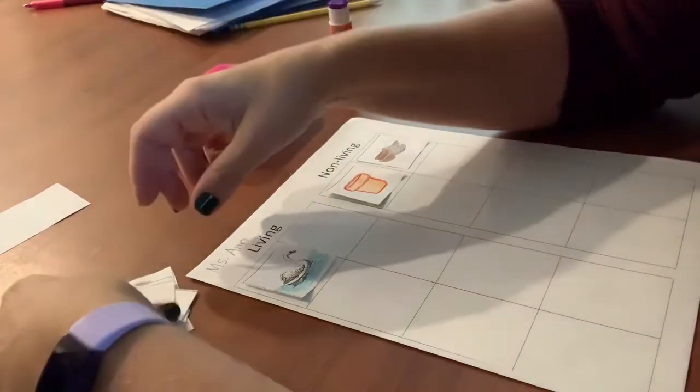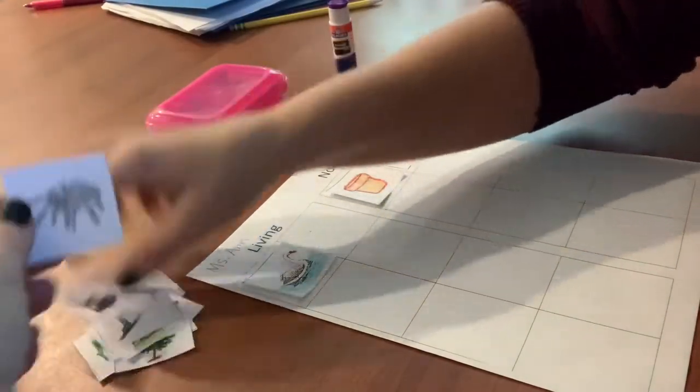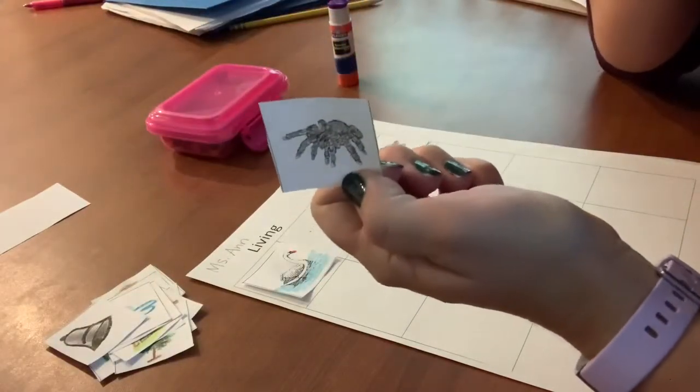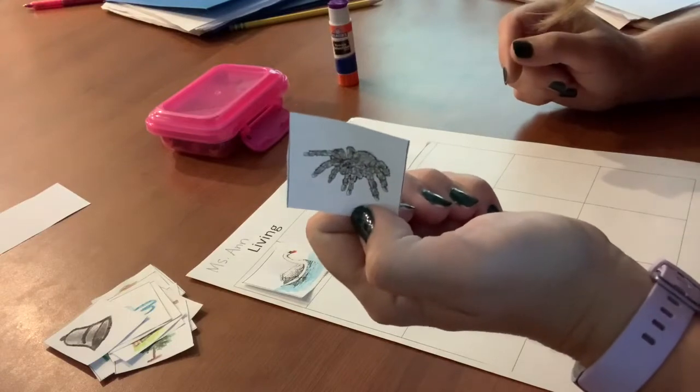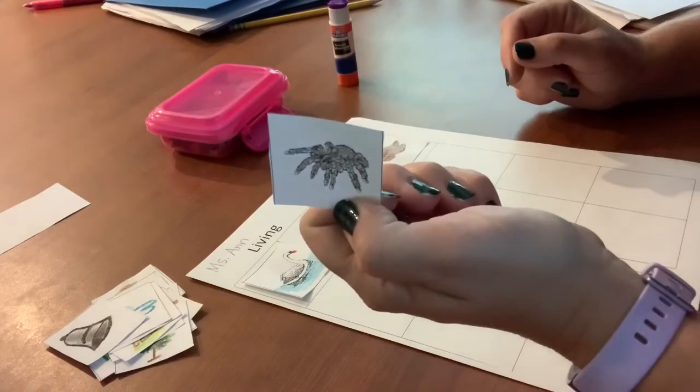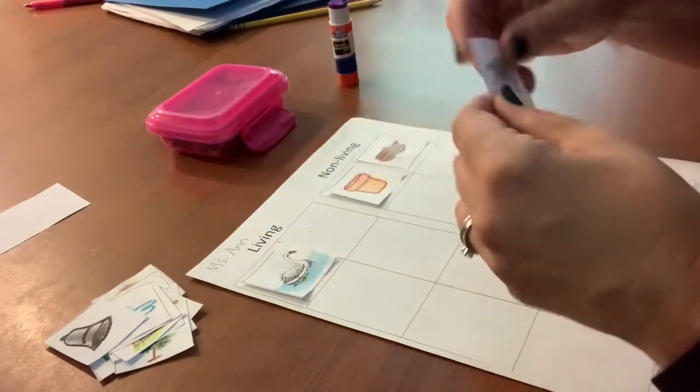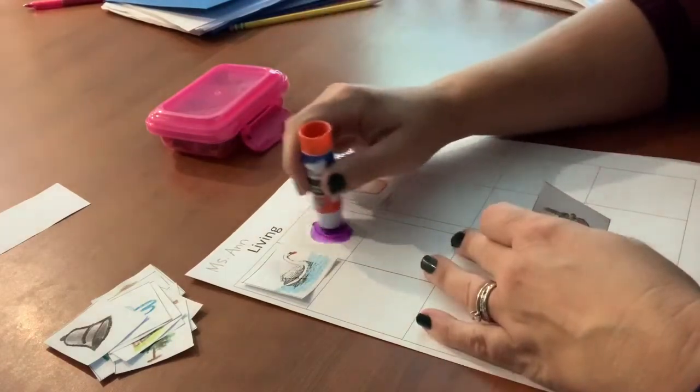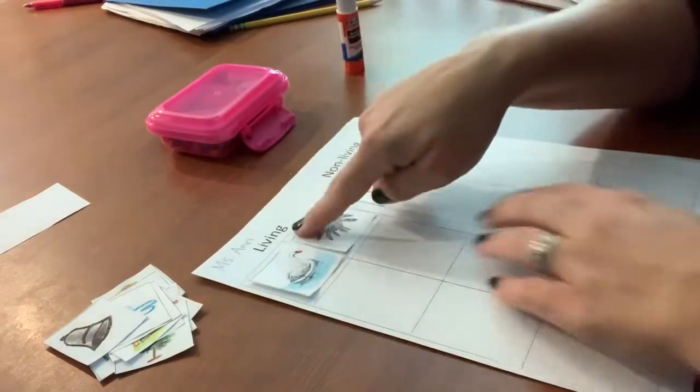All right let's do one more together. How about the scary spider? Does this scary spider need food? You bet. Does this scary spider grow? Yes. This spider is a living thing. So this spider will go right next to our swan. It is a living thing.